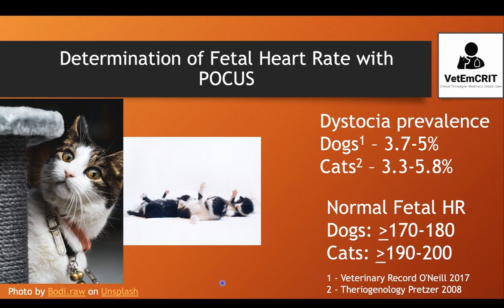One of the most important steps while assessing a patient with dystocia is to determine if fetuses are viable, and if so, what are their heart rates? In dogs, the normal fetal heart rate should be at least 170 to 180 beats per minute, and in cats it could be higher, starting at 190 to 200 beats per minute.